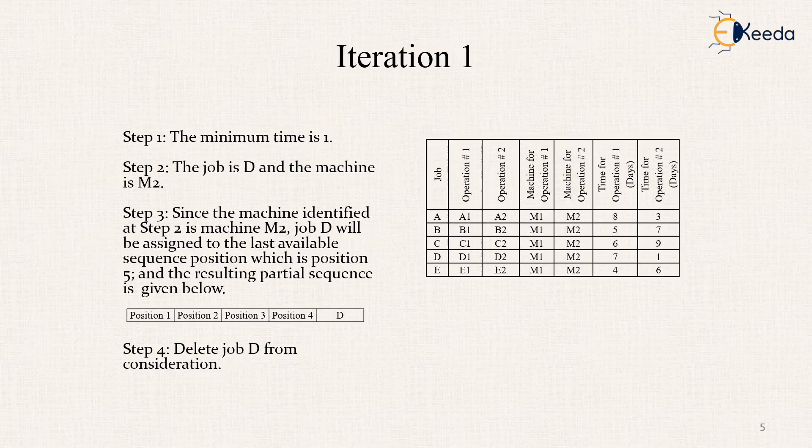For example, we see that in this equation 1 we have different jobs A, B, C, D, E whose operation 1, 2 is given A1, A2, B1, B2, C1, C2, D1, D2 and E1, E2. So for machine for operation 1 is M1 for all, M2 for all, and the time for operation 1 is 8 days, 5 days, 6 days, 7 days and 4 days respectively. The time for operation 2 is 3, 7, 9, 6, 19, 16 days.